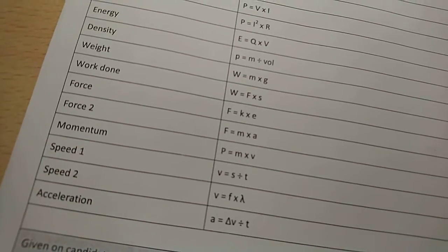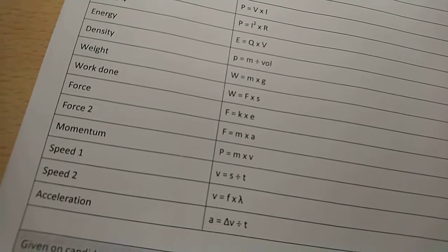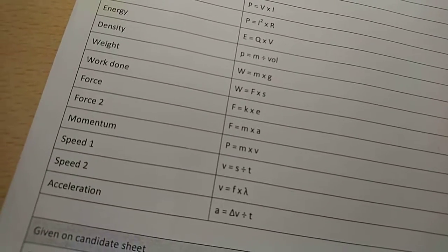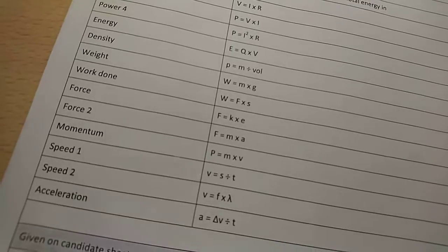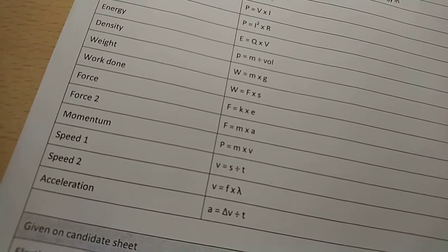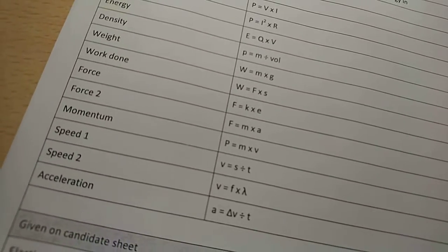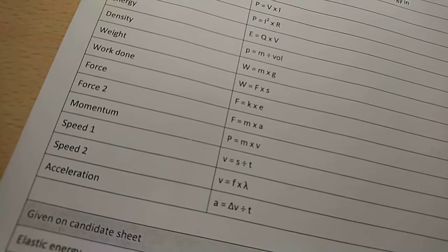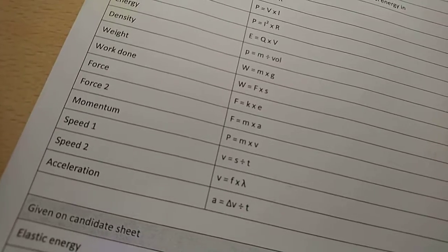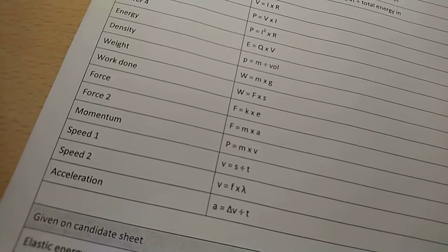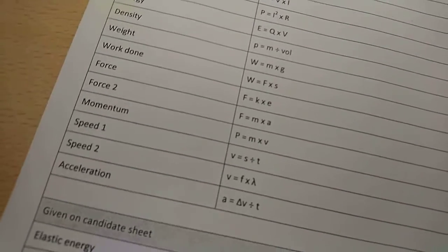And then force two. F equals M times A. I believe that is force equals mass times area. Force in newtons again, and then mass in kilograms and area should be in meters squared. But I'm not entirely sure. Well, momentum.